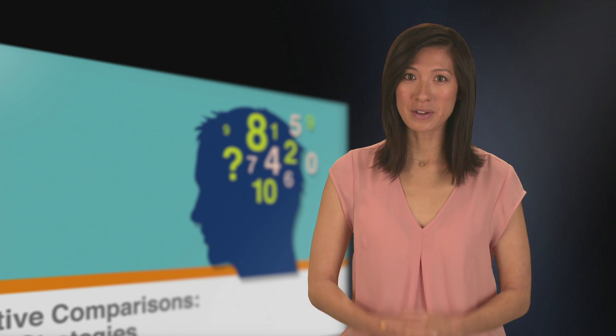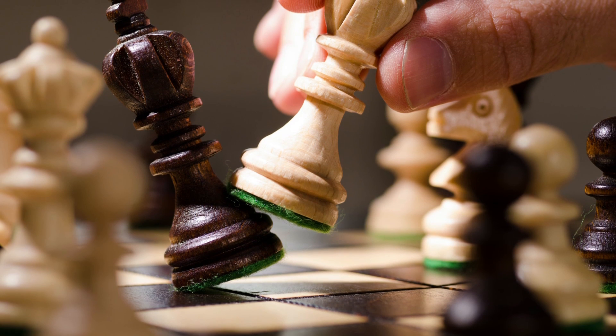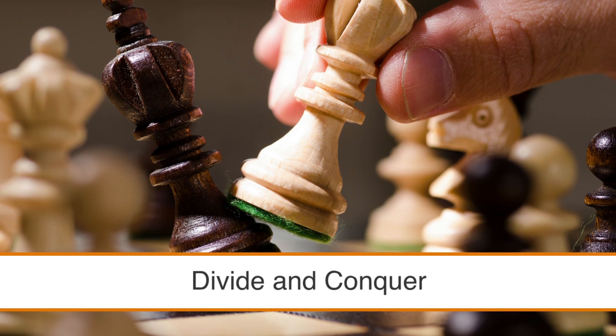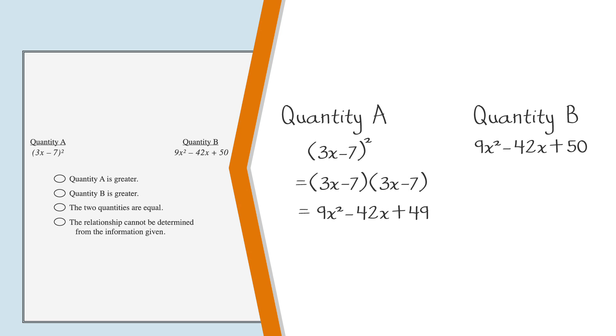But we still haven't found our answer yet. Let's move on to the next strategy, which is called divide and conquer. If we consider each of the terms independently, we notice that the first two terms of both columns are exactly the same. 9x squared minus 42x.